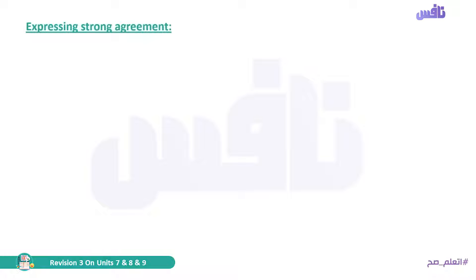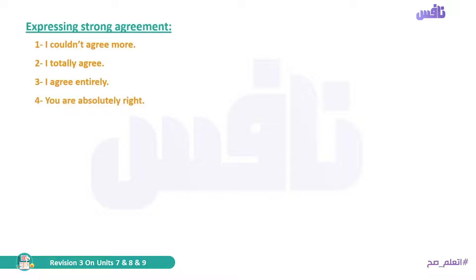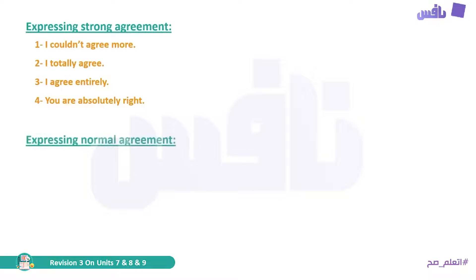In this part we're going to deal with agreement. We'll start with expressing strong agreement. The expressions are: 'I couldn't agree more' — meaning I strongly agree with you; 'I totally agree'; 'I agree entirely'; and 'You are absolutely right'.